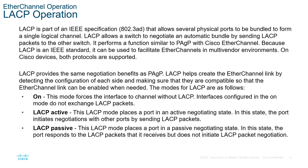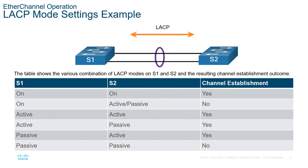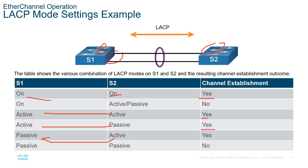For LACP, the modes available are ON, ACTIVE, and PASSIVE. This is an IEEE standard, so you can see this protocol on other vendors as well, making it suitable for multi-vendor environments. Cisco supports both PAGP and LACP. If you use LACP on one switch, LACP must also be set up on the other — you cannot mix LACP with PAGP; it will not work. Both sides should be ON, or ACTIVE-ACTIVE, ACTIVE-PASSIVE, or PASSIVE-ACTIVE. Those are the different options to establish an EtherChannel.